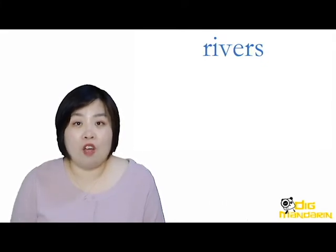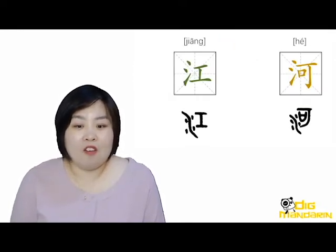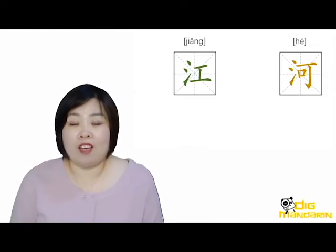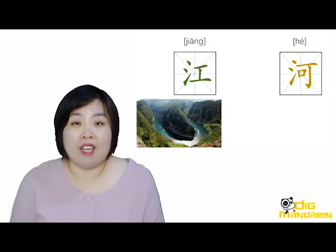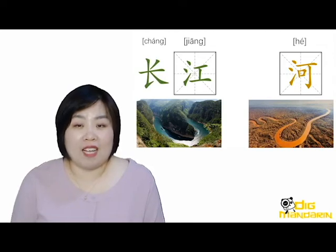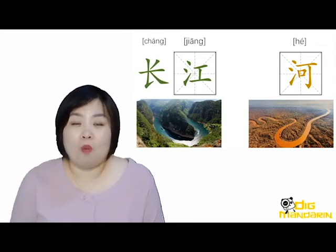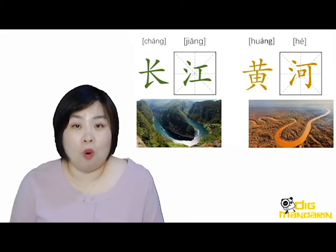Let's talk about different types of water on earth. First, rivers. In Chinese, we call them 江 or 河. For example, the two most famous rivers in China are the Yangtze River and Yellow River. The Yangtze River is called 长江, a.k.a. the Long River, while the Yellow River is called 黄河.